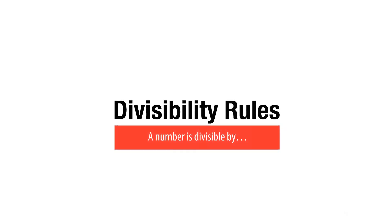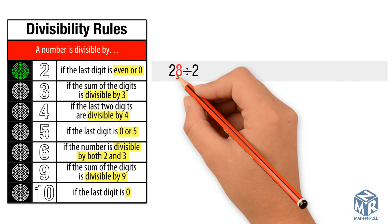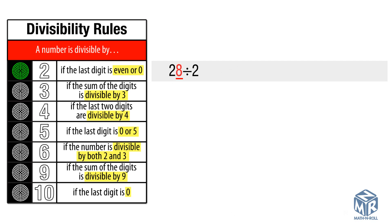Divisibility rules. A number is divisible by 2 if the last digit is even or 0. Let's look at an example. 28 divided by 2: the last digit is 8, which is even, so 28 is divisible by 2. 40 divided by 2: the last digit is 0, so 40 is divisible by 2.